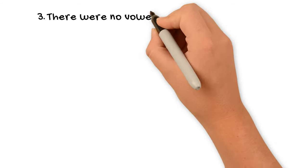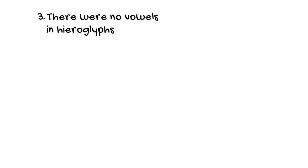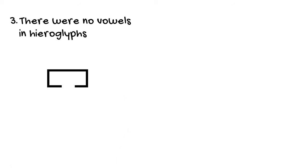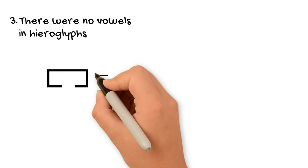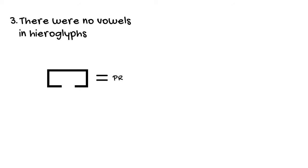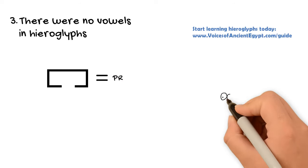Number three. There were no vowels in hieroglyphs. Now you might have noticed that I didn't mention any vowels when I was talking about the Egyptian words for house and to go out. And perhaps you were wondering where the heck are the vowels? You only mentioned P and R, which are consonants. Well, that's because the ancient Egyptians did not write vowels at all. They only wrote consonants.